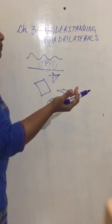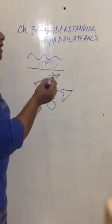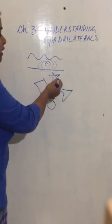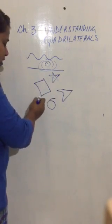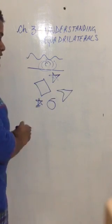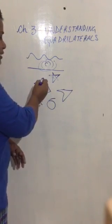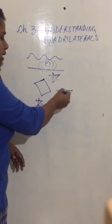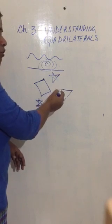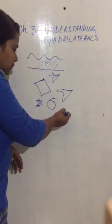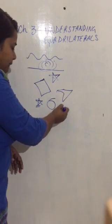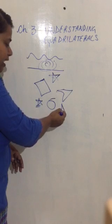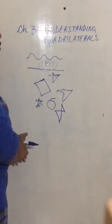Then what is a closed curve? A curve that begins and ends at the same point. Like this one — I started it here and then I finished it here. So this is a closed curve. This one I started from here and I finished it here — closed curve. I started from here and I closed it here, and I finished off here. So this is a closed curve.